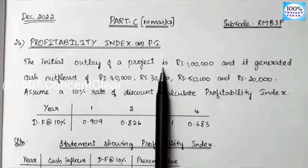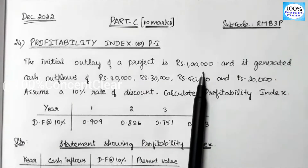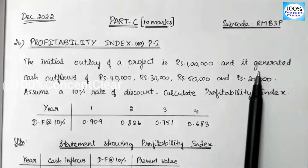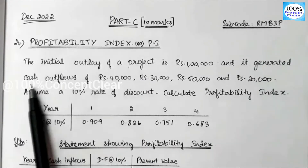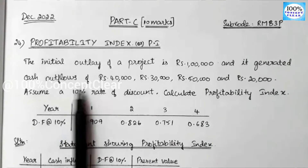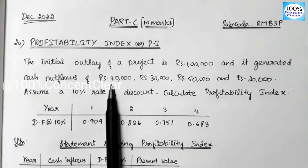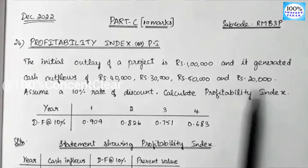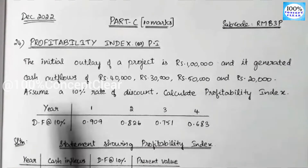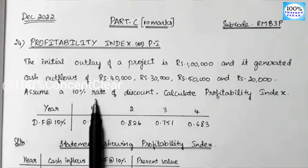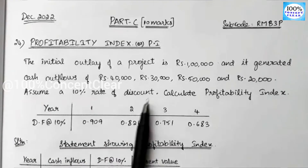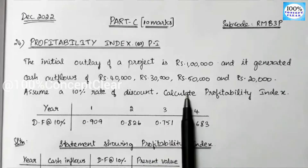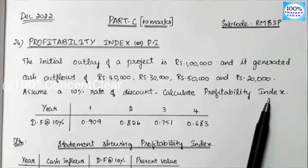The initial outlay of a project is 1 lakh. It generates cash inflows of 40,000, 30,000, 50,000 and 20,000. Assume a 10% rate of discount. Calculate the Profitability Index.